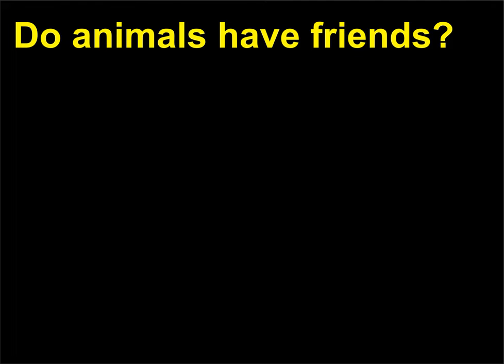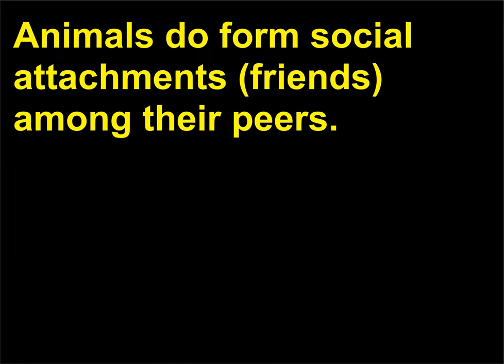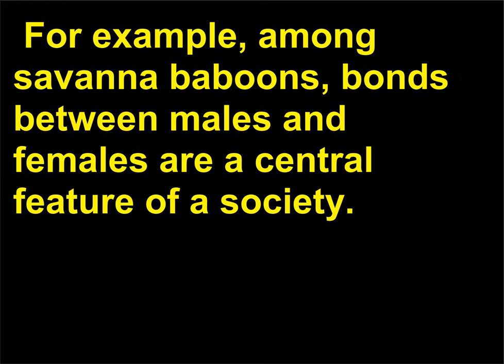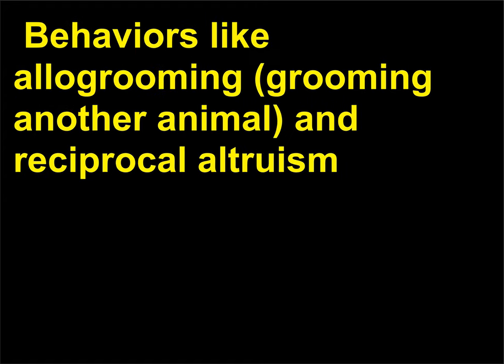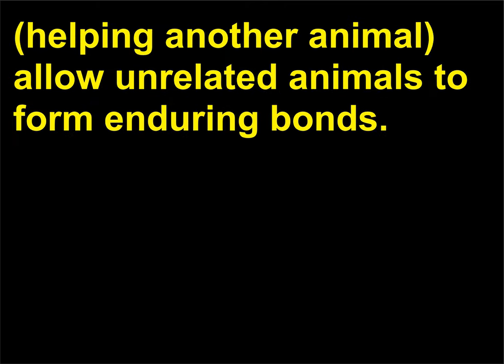Do animals have friends? Animals do form social attachments, friends, among their peers. For example, among savannah baboons, bonds between males and females are a central feature of a society. Behaviors like alo-grooming, grooming another animal, and reciprocal altruism — helping another animal — allow unrelated animals to form enduring bonds.